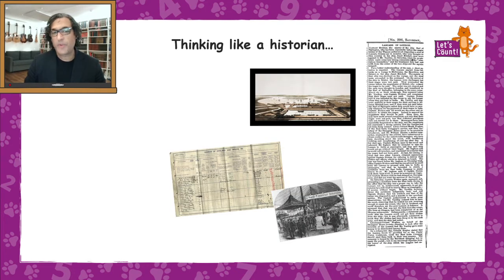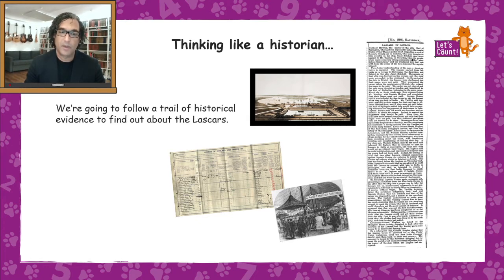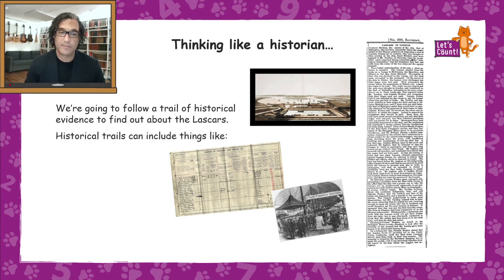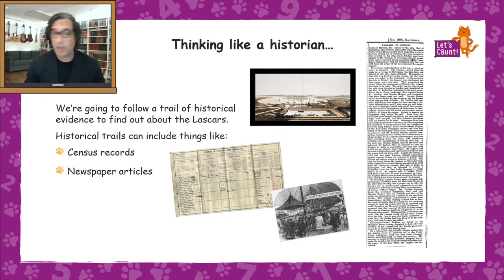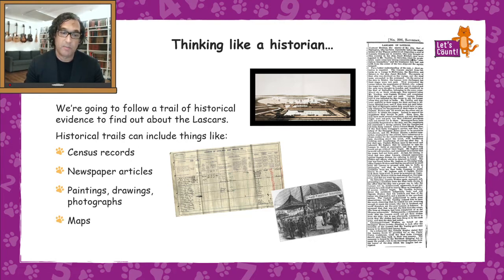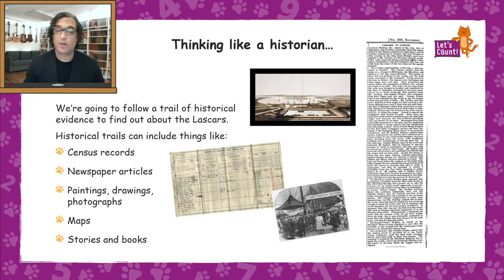In this lesson we're also going to learn how to think like an historian. We're going to follow a trail of historical evidence to find out all about the Lascars. Historical trails can include things like census records, newspaper articles, paintings, drawings, photographs, maps, stories, and books — all of these are historical evidence that we can use in our trail.